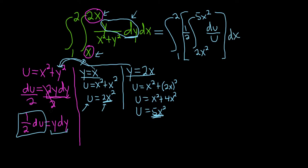Let me go over what we just did. The y dy term became 1/2 du. The denominator is just u, and we changed our limits: x became 2x squared, and 2x became 5x squared, because before it was y equals x and now it's u equals 2x squared. These are u limits of integration.